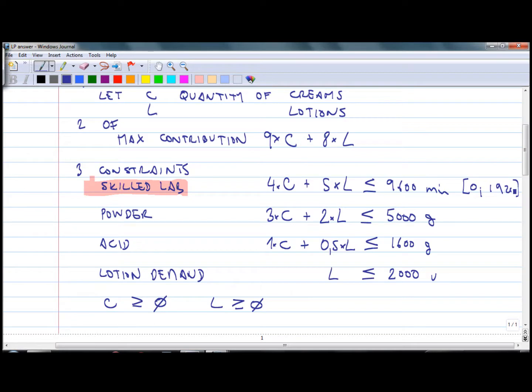So we have calculated the intercept with C axis. In a similar way we can calculate intercept with L axis. If L equals zero, how much is C? It's going to be 9600 divided by 4, which gives you 2400. You can calculate in a similar way intercept with two axes for the remaining constraints. So try to do it for powder and acid.